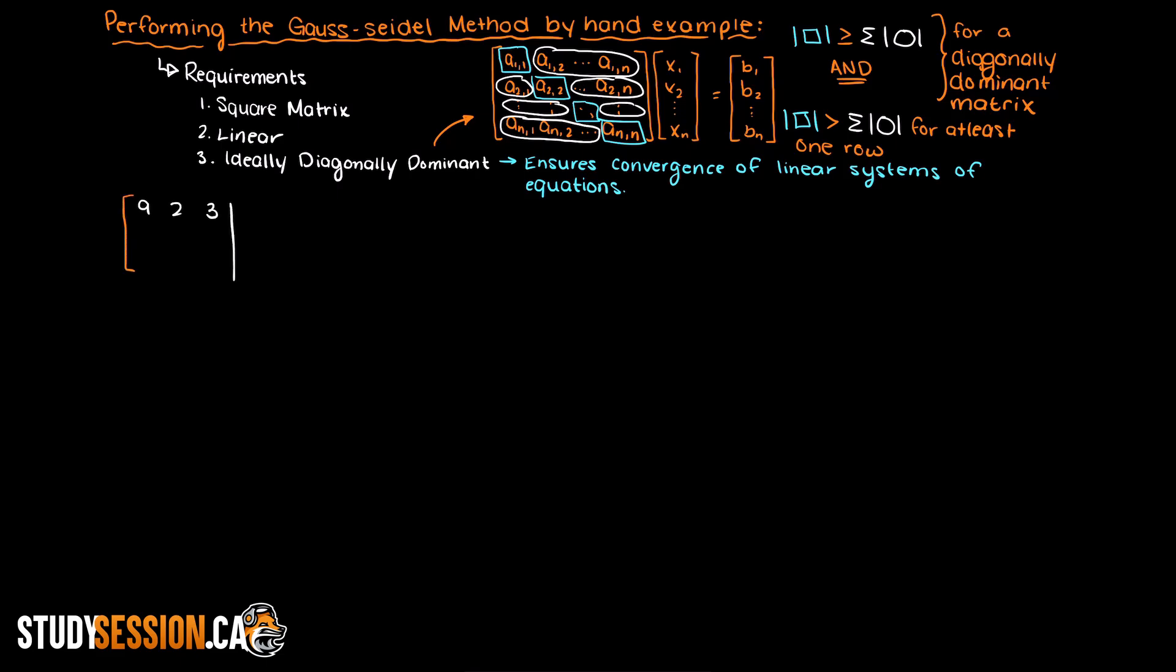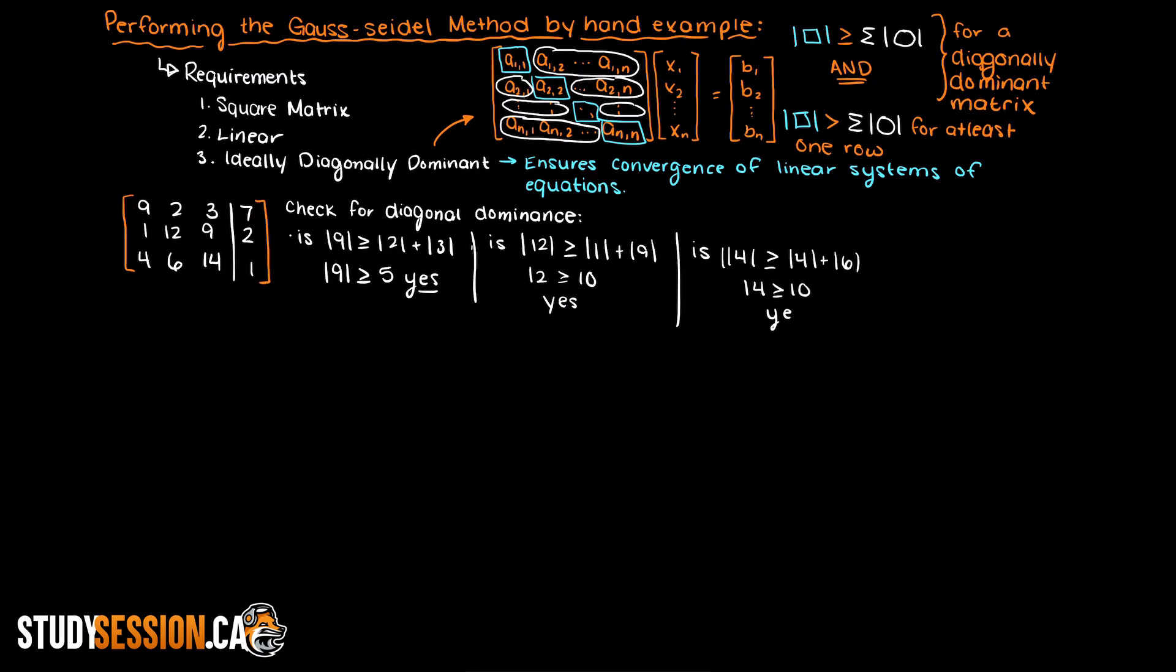Alright, so we need to solve the following matrix using the Gauss-Seidel method. Before we begin going through the steps, let's check to see if our matrix is diagonally dominant. A diagonally dominant matrix states that for every row in our linear matrix, the diagonal value is greater than or equal to the sum of the rest of the row. Additionally, we need the diagonal value in one of our rows to be strictly greater than the sum of the other elements in its row.